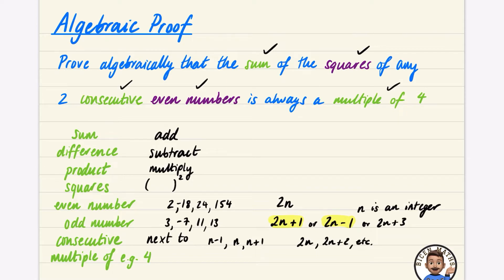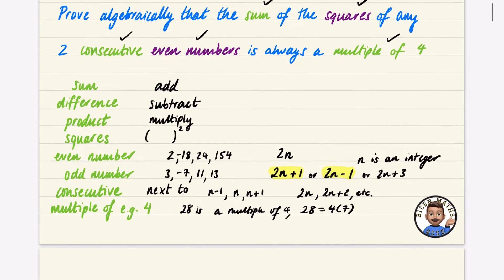If something is a multiple of 4, it can be expressed as something multiplied by 4. For example, 28 is a multiple of 4 because 28 equals 4 multiplied by 7. To show something is a multiple of 4 algebraically, you want to write it as 4 times some expression in brackets, where what's inside the brackets is an integer.